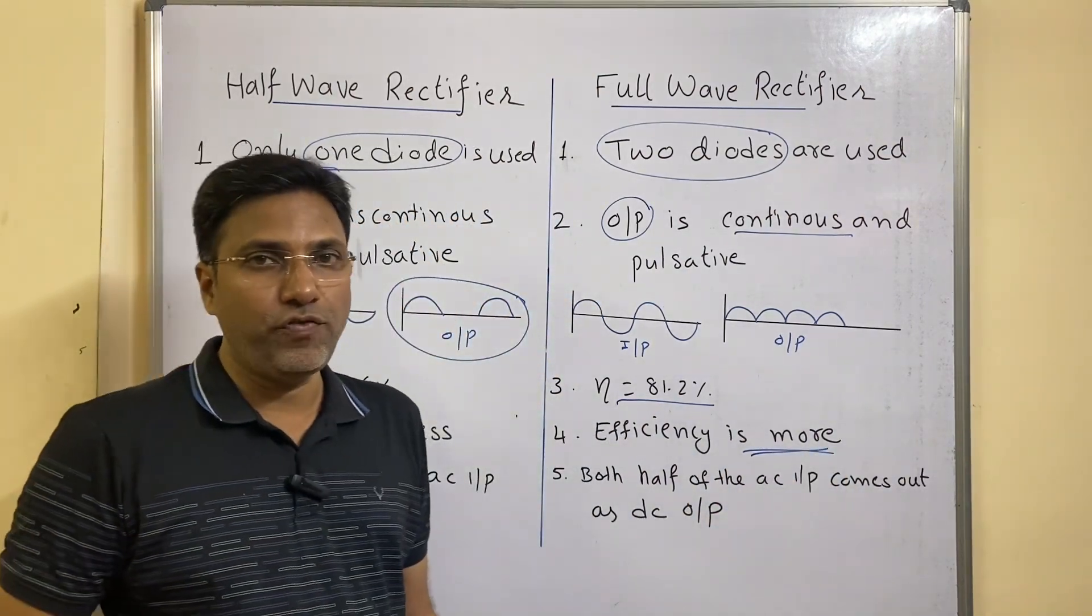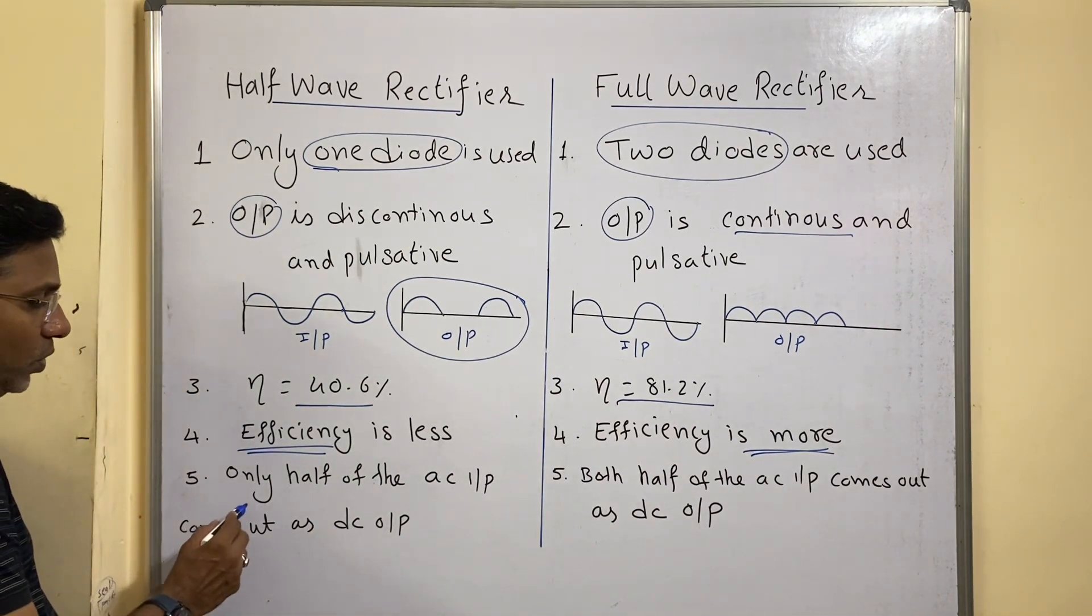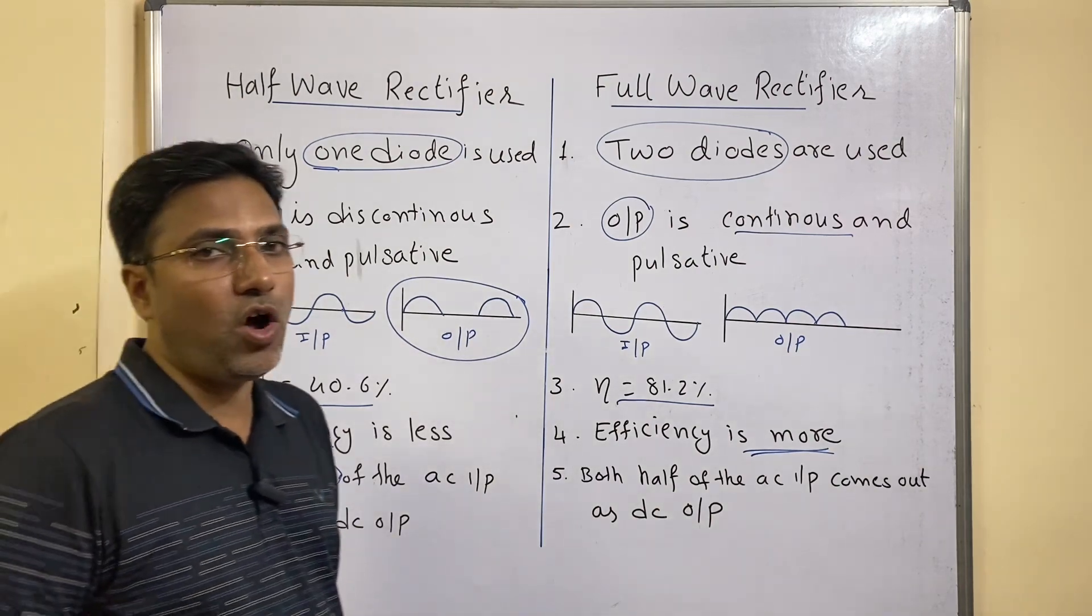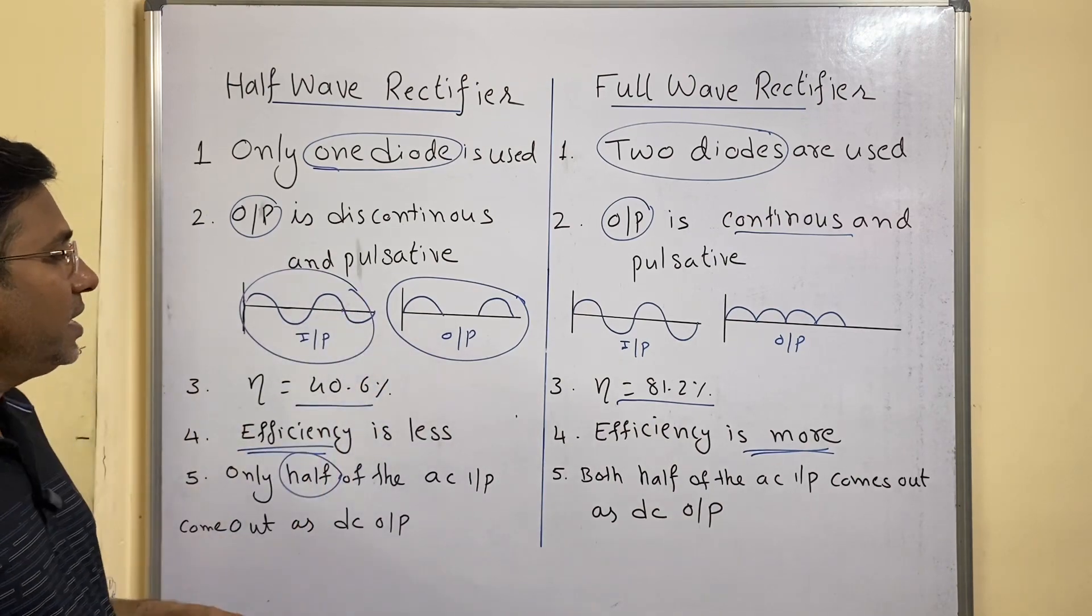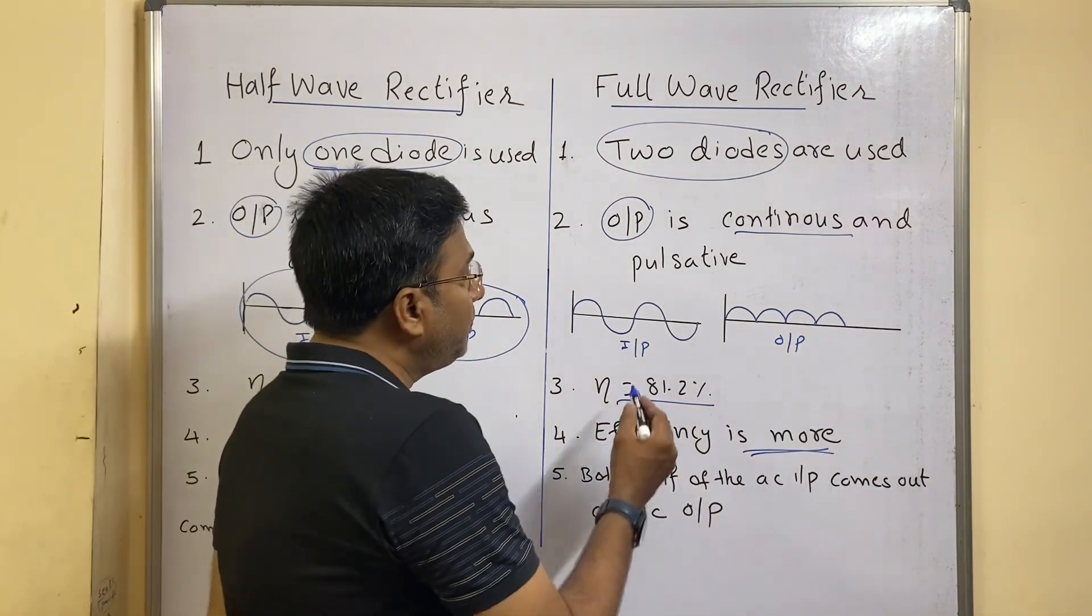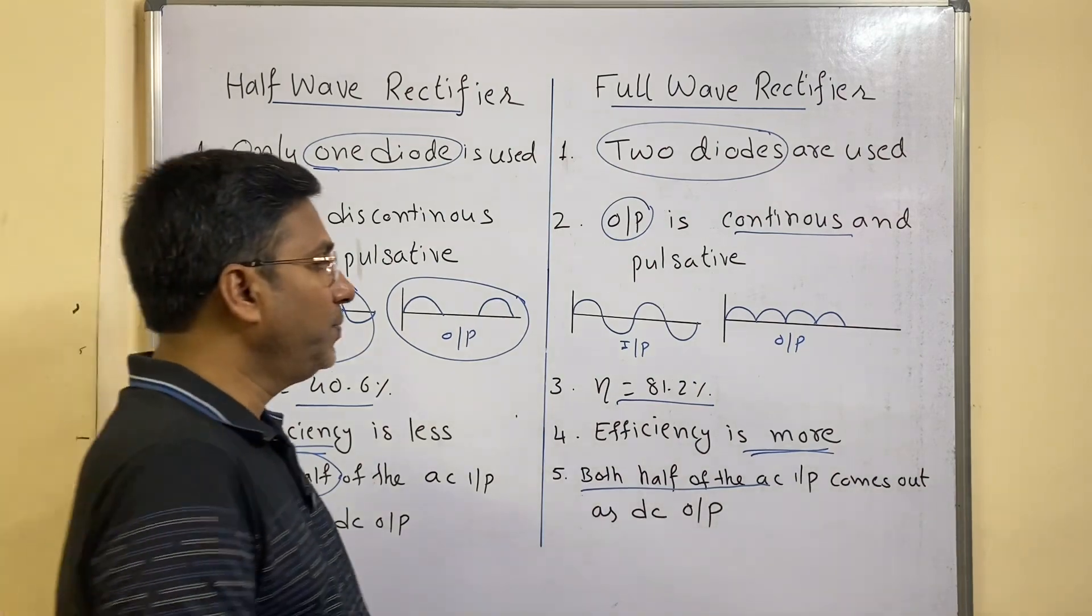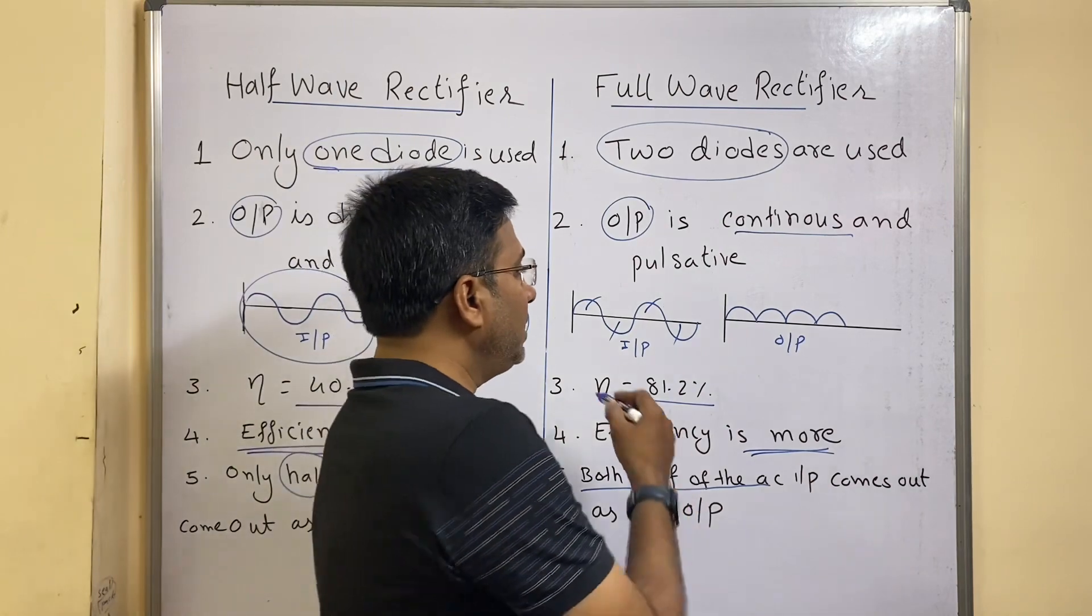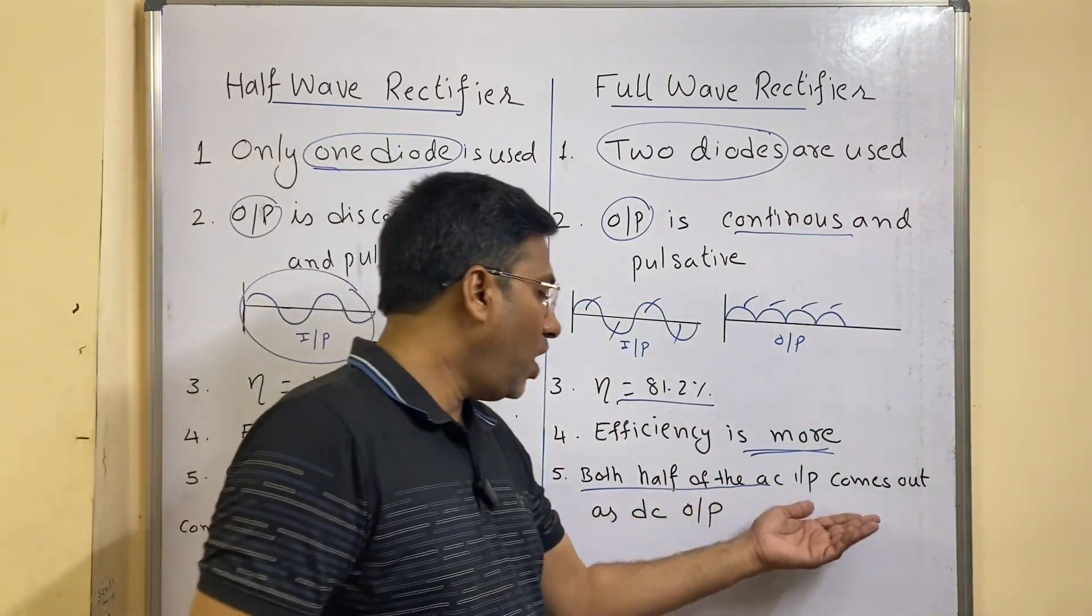Let us come to the last point. Only half of the AC input will come out as DC output. In this diagram you can see here, we have given two cycles but at the output you will get only half. Similarly, in case of full wave rectifier, both halves of the inputs will come out as output. Here you can see one, two, three, four pulses in the input, and here also you can see four. That means all will come out in the output—both halves of the AC input come as DC output.